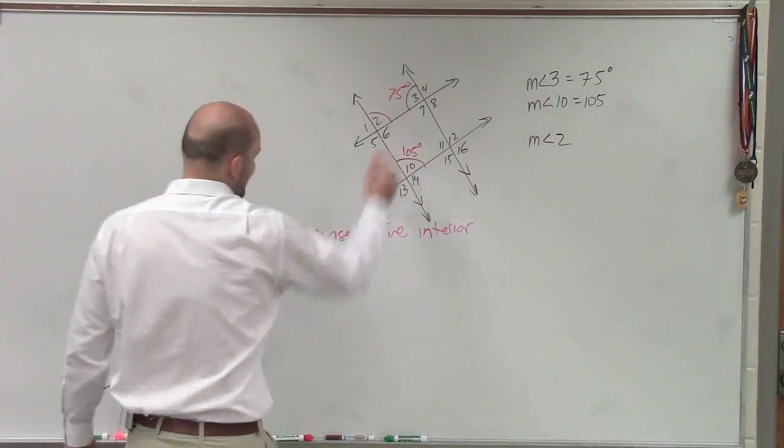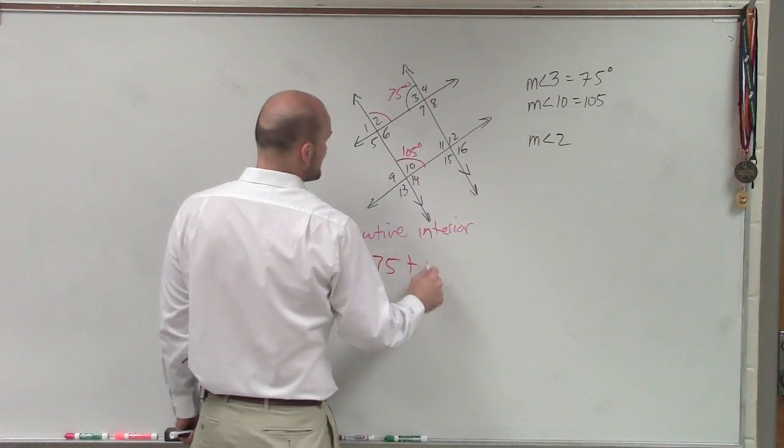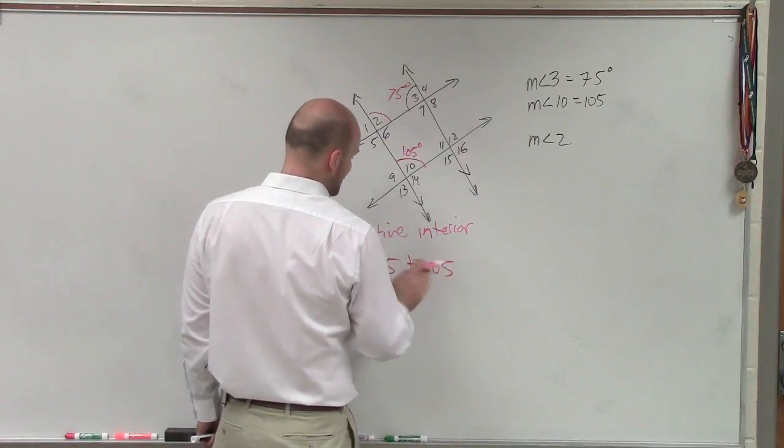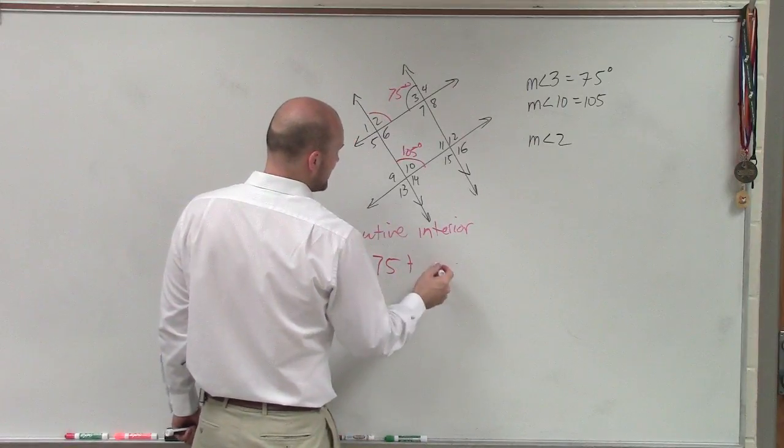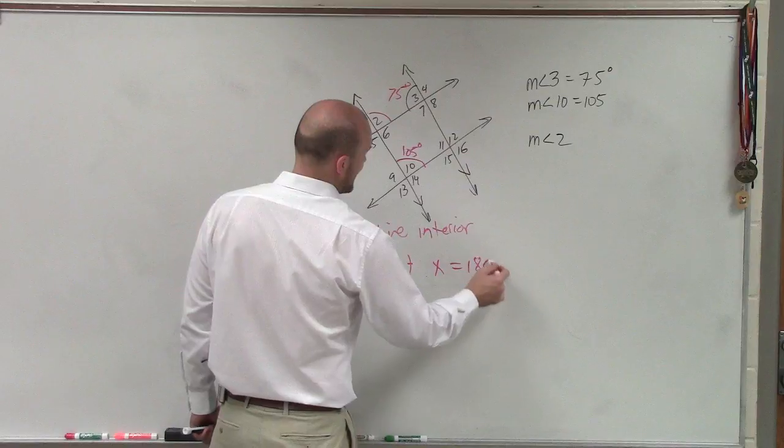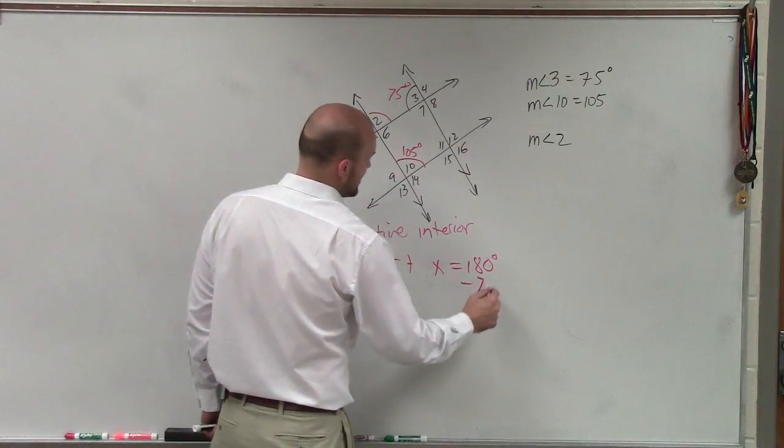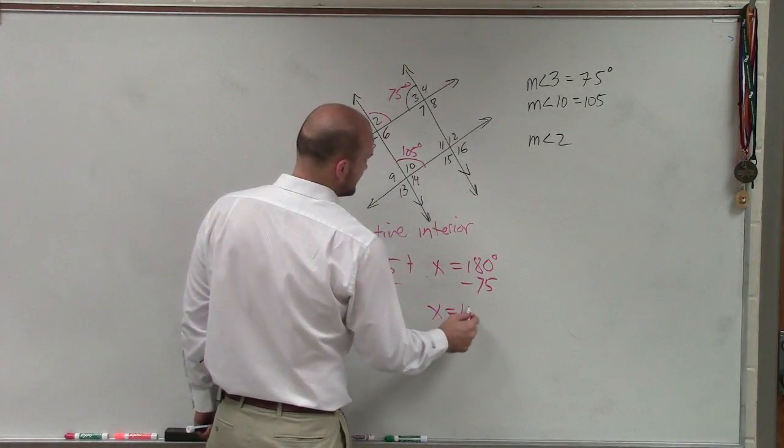There you go. So therefore, we have 75 plus x equals 180. Subtract 75, subtract 75, x equals 105.